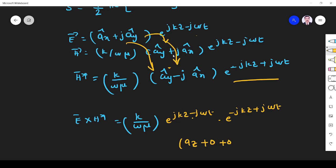And ay cross ax minus az, but j into j, j squared minus 1, minus of minus 1 plus 1. So plus, so this az is cancelled by this one.